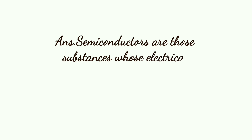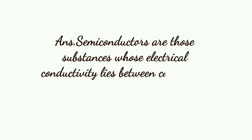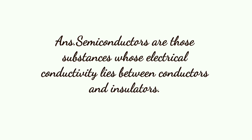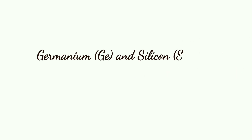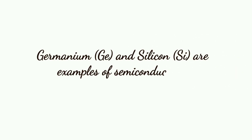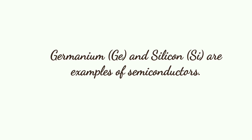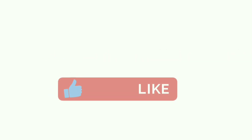Define semiconductors. Semiconductors are those substances whose electrical conductivity lies between conductors and insulators. Germanium and silicon are examples of semiconductors.